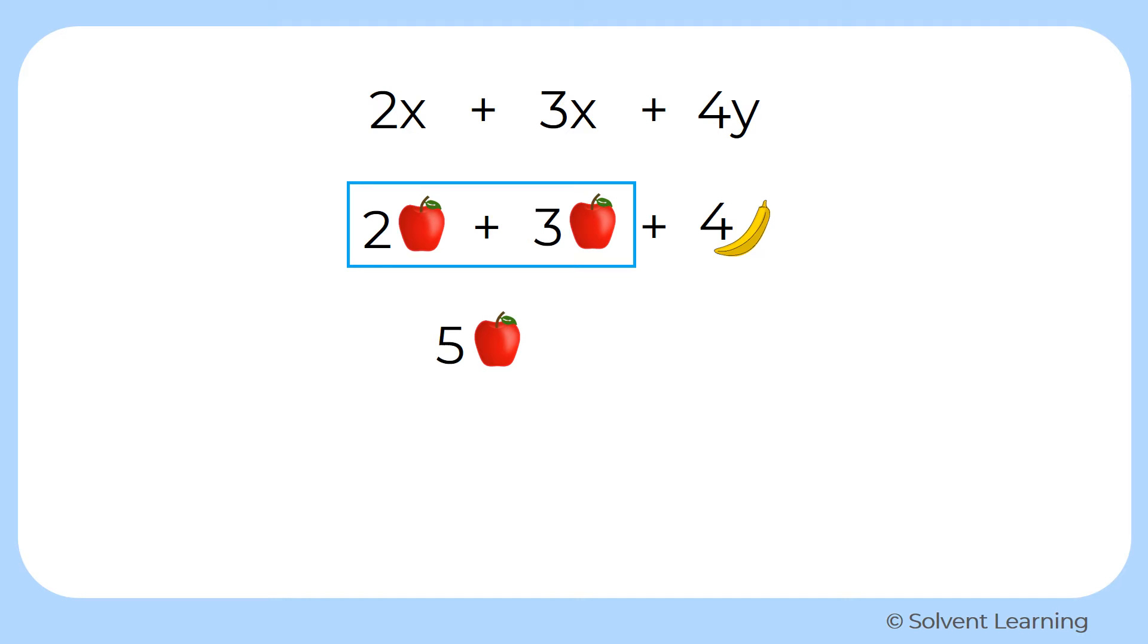Wouldn't it make a little more sense or be more efficient to just combine the apples together and say, hey, I have five apples and four bananas? We're representing the same amount of apples and bananas, just representing it in a more efficient or simplified way. And that's really all we're doing when we're combining like terms.